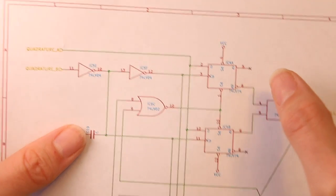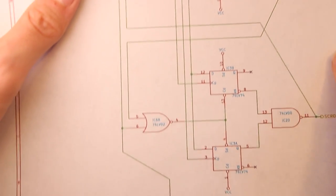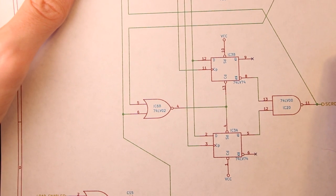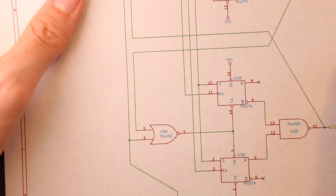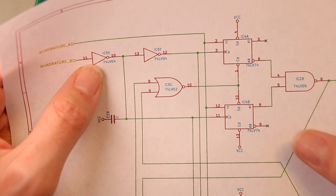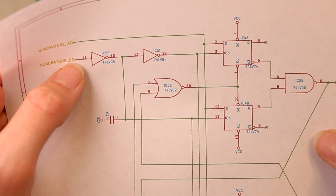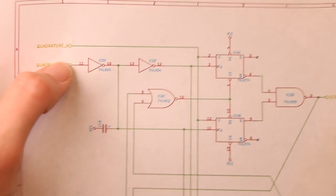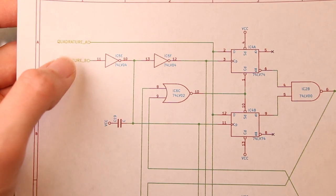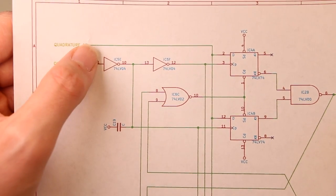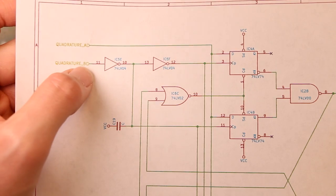The A signal feeds the data input on all four of these flip-flops which have the opportunity to sample that signal at different points in time. In this case some of the flip-flops are being set up to sample when quadrature B goes high and some are sampling when quadrature B goes low. This lets us build a logic circuit that makes determinations based on what state quadrature A is in any time quadrature B changes.